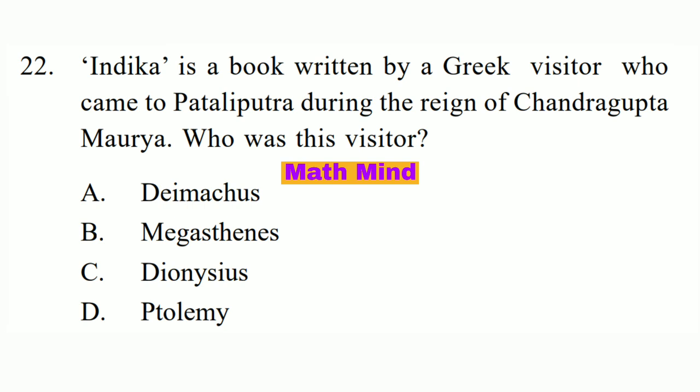Question No. 22. Indica is a book written by a Greek visitor who came to Pataliputra during the reign of Chandragupta Maurya. Who was this visitor? Option B is correct: Megasthenes.